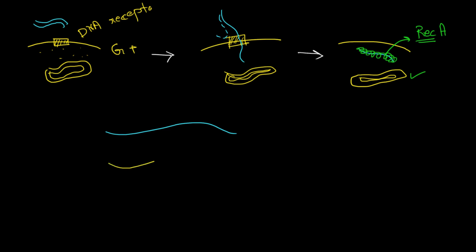A homologous region means: if the single-stranded DNA that just entered the cell contains any part with the same sequence of nucleotides as one of the strands of the bacterial chromosomal DNA, then those two segments are called homologous segments. For example, if the single-stranded DNA contains a segment A-A-G-T-C and the bacterial chromosomal DNA also contains A-A-G-T-C, those two segments are homologous.